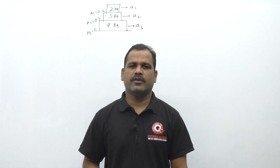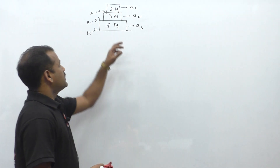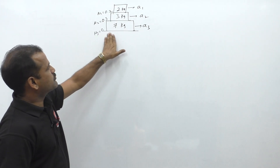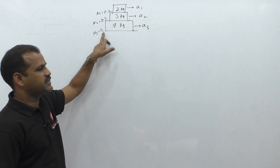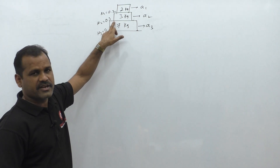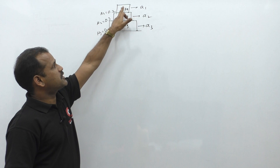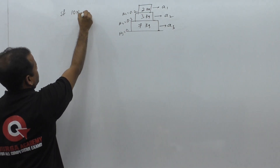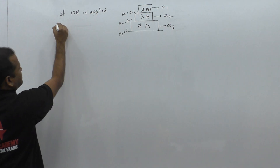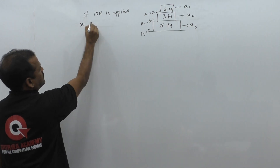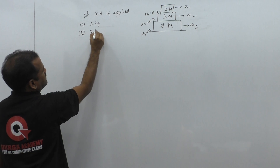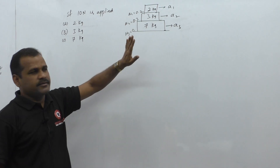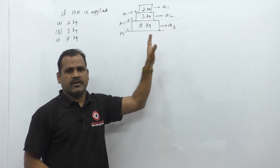Let us discuss the block on block problem with respect to three blocks. The figure shows a 2kg block on a 3kg block, and a 3kg block on a 7kg block, all on a smooth horizontal surface. The coefficient of friction between the surface and the blocks is zero. The coefficient of friction between the 3kg and 7kg block is 0.3, and between the 2kg and 3kg block it is 0.2.